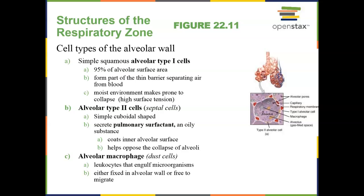What are the three major types of cells associated with our alveoli? We have Type 1 and Type 2 alveolar cells, and then we have macrophages. Type 1 alveolar cells are the most common and are simple squamous epithelium — this is where gas exchange occurs. Type 2 alveolar cells, also known as septal cells, are simple cuboidal in shape and they produce pulmonary surfactant. Alveolar macrophages are there to protect the lungs from any potential pathogens.